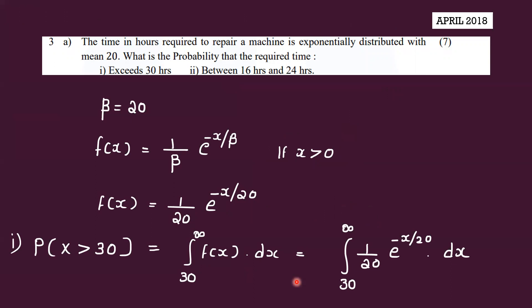The time in hours required to repair a machine is exponentially distributed with mean 20. What is the probability that the required time exceeds 30 hours, and the probability it is between 16 hours and 24 hours? Here beta is equal to 20, so f(x) = (1/20) * e^(-x/20).